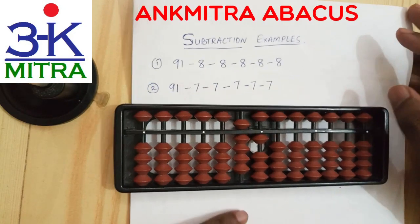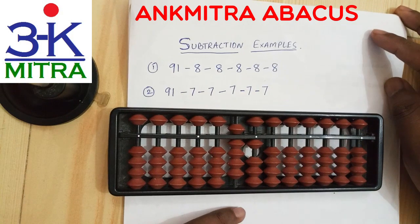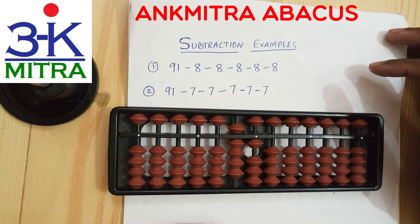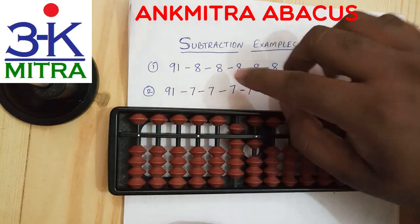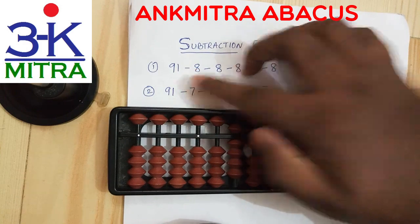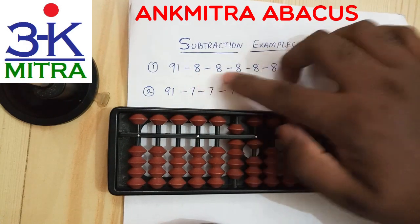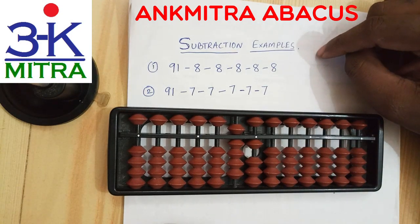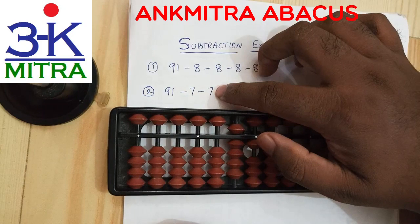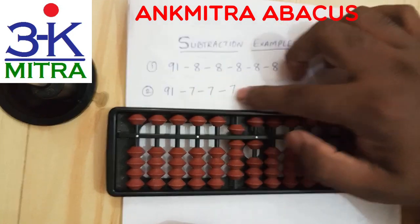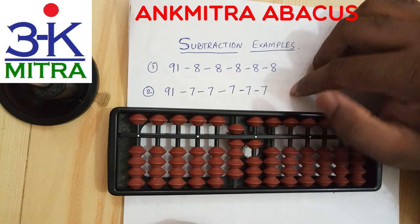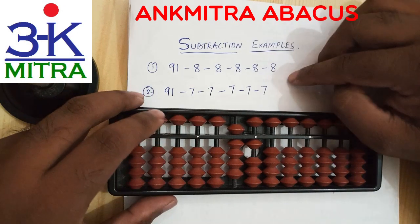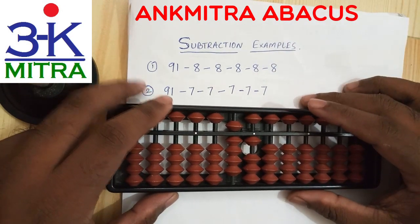Hello everyone. In this video I'll be demonstrating how we subtract the digits 8 and 7 in different situations. I'll be using 91 as the starting number and subtract 8 repeatedly 5 times so that we encounter all the different situations possible. Similarly, I will start with 91 and subtract 7 repeatedly 5 times to encounter all the different possible situations for subtracting these two digits.